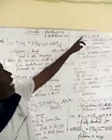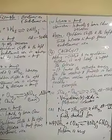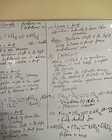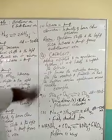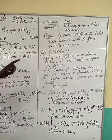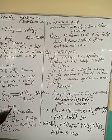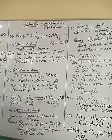An increase in temperature will make the equilibrium shift to the side which absorbs heat, so that the temperature is decreased. The observation here is that the intensity of the brown colour will decrease, because the equilibrium shifts to the left, since the increase in temperature favours the endothermic backward reaction.